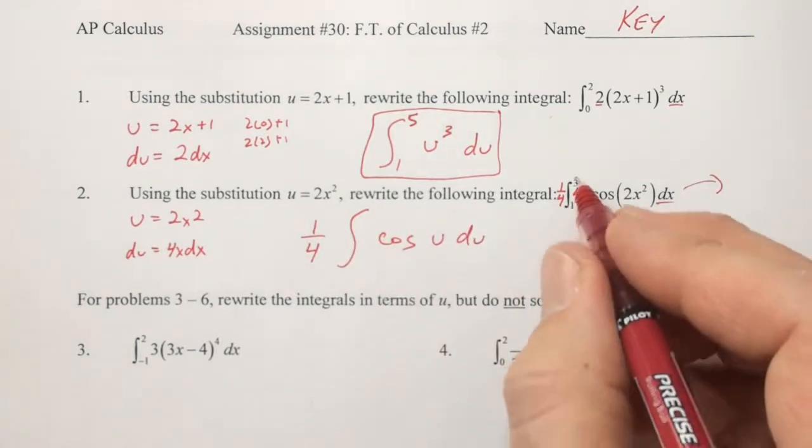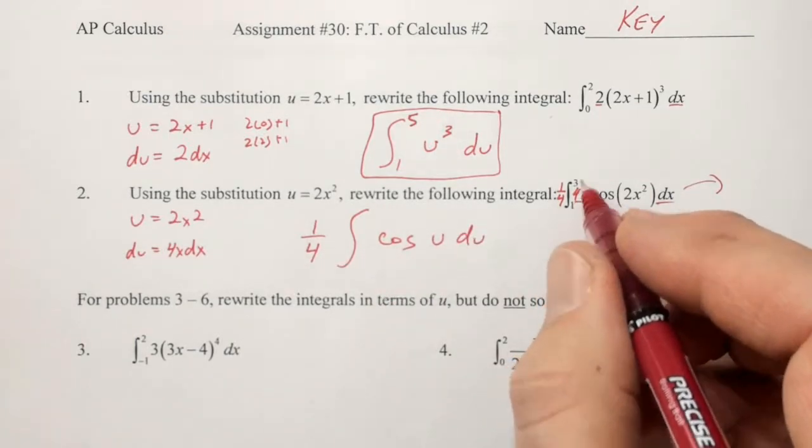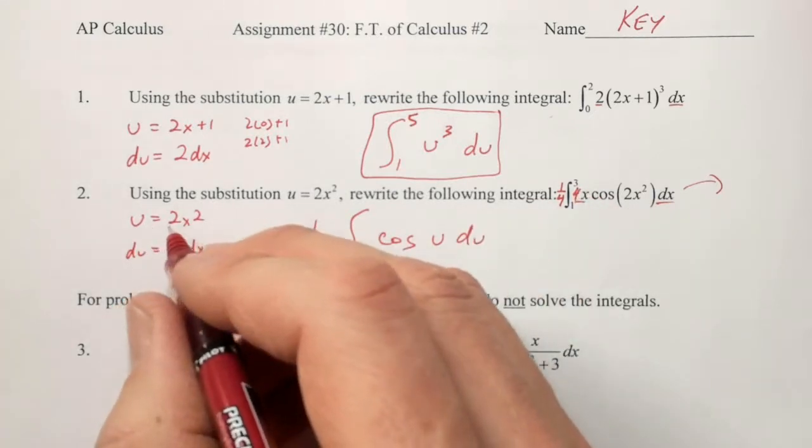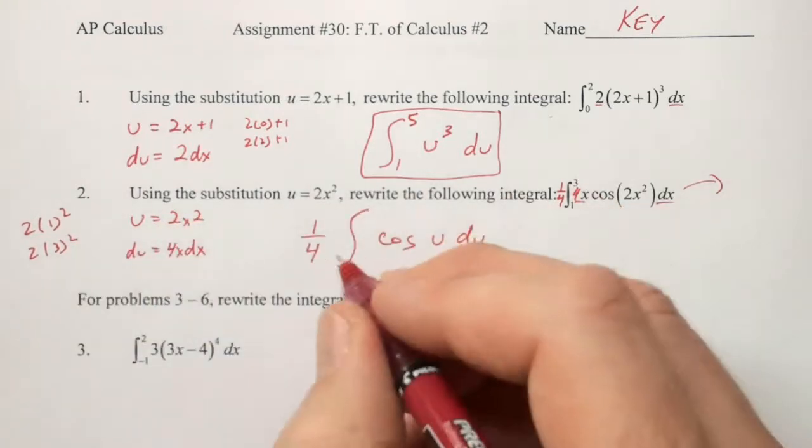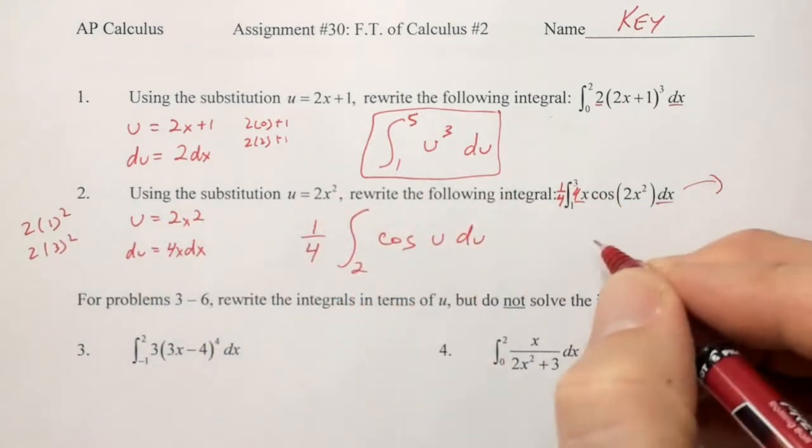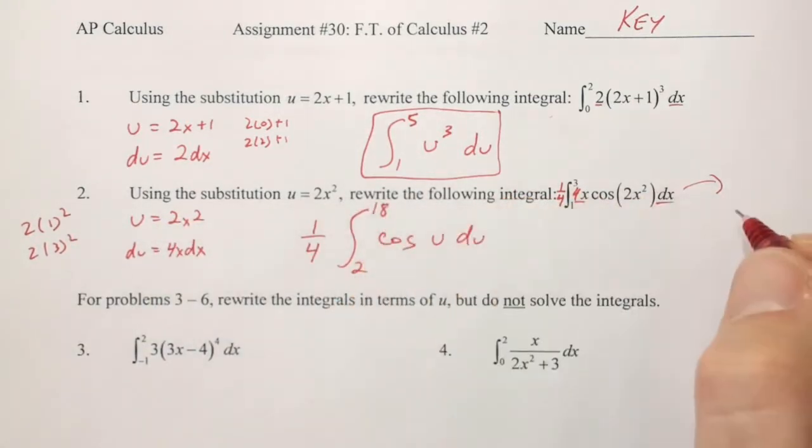Our bounds are not going to be 1 and 3 anymore. We're going to plug 1 and 3 into u, so we're going to have 2 times 1 squared and 2 times 3 squared. Our new low bound is 2, our new upper bound is 18.